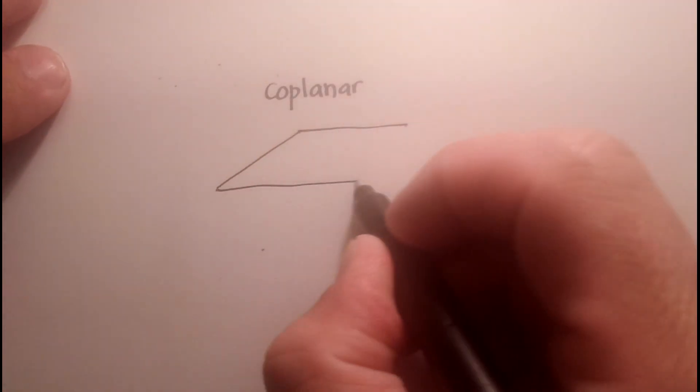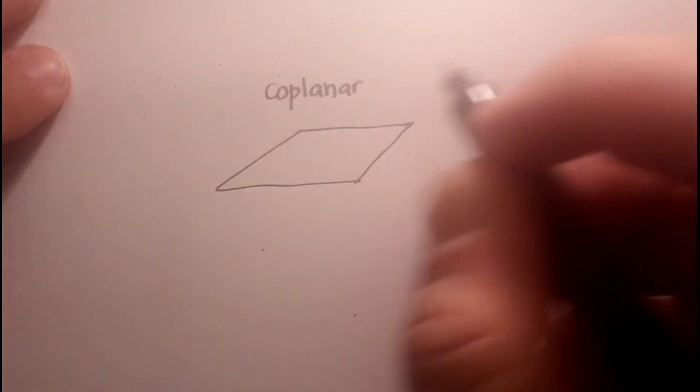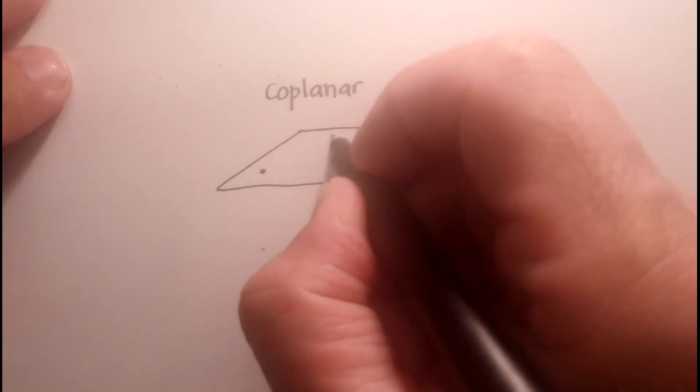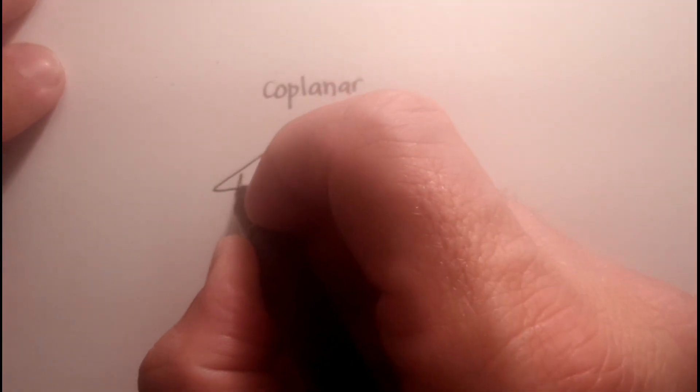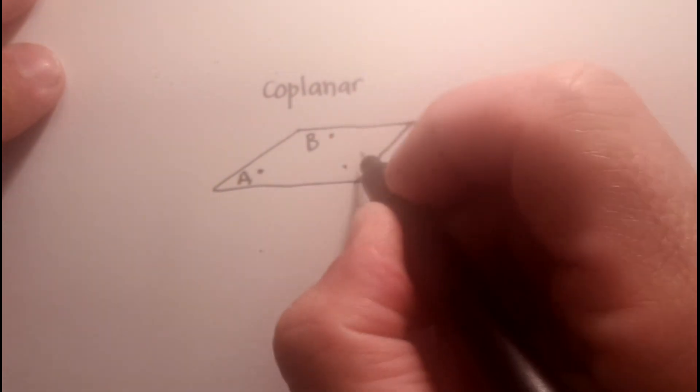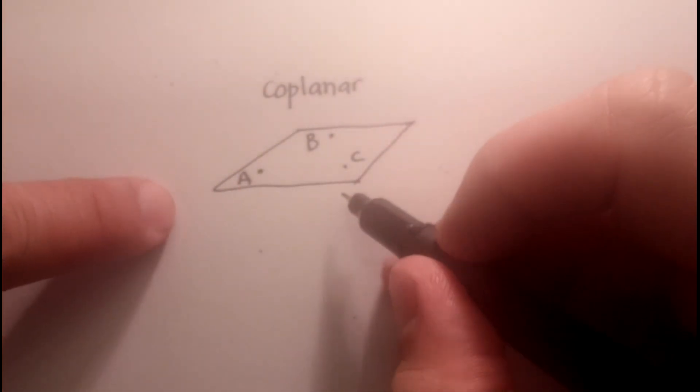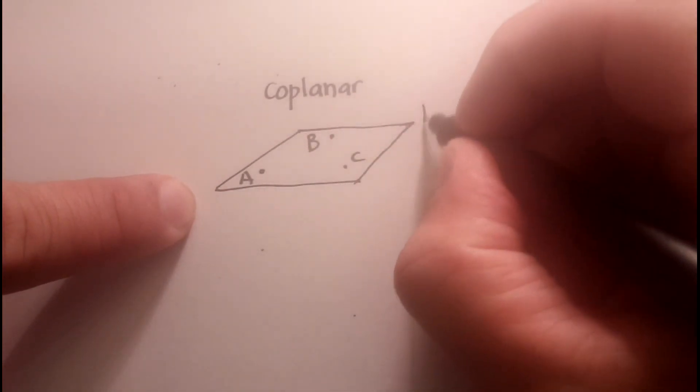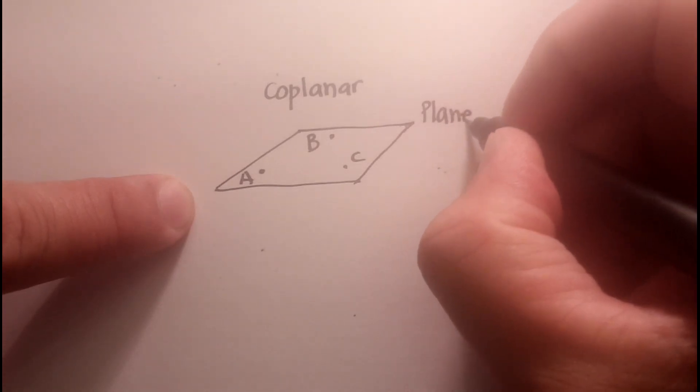So let's draw our plane. And again, let's put three points on this plane, and let's call them A, B, and C. So again, remember, I can call this plane A, B, C.